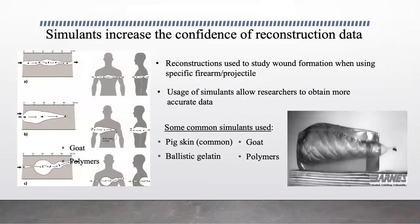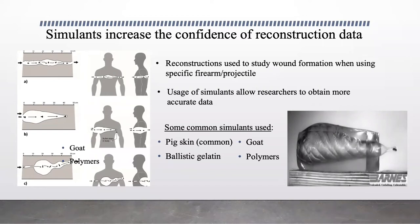Reconstructions of crime scenes are used to gain a better understanding of the events that took place. One use of reconstructions includes being able to identify whether a firearm of interest may have caused an injury found in a victim. A main requirement of reconstruction is human body representation. Although the best representation would be human tissue, ethics lead many scientists to use simulants instead, which are materials similar to human tissue. A commonly used muscle substitute is ballistic gelatin, which can provide valuable information regarding wound formation. However, we humans also have a thin layer of tissue surrounding our bodies called skin.